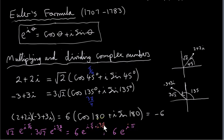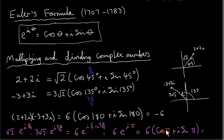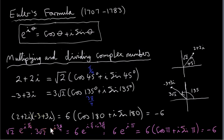Pi over 4 plus 3 pi over 4 is 4 pi over 4, which is pi. Then we re-express our complex number in rectangular form as 6 times cos pi plus i sine pi, using Euler's formula. Cos of 180 is minus 1, so 6 times minus 1 is minus 6, and sine of 180 is 0. Euler's formula shows us very clearly that when we multiply two complex numbers, we multiply the moduli and add the arguments.